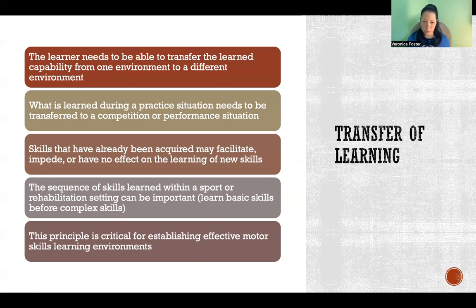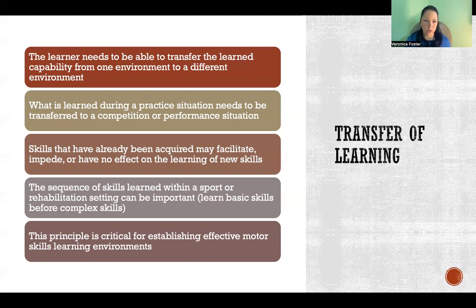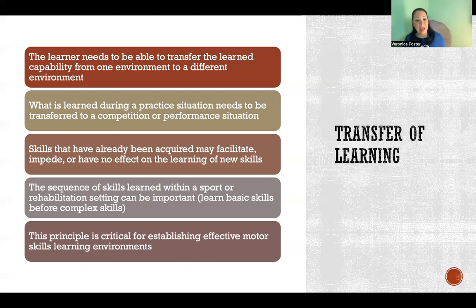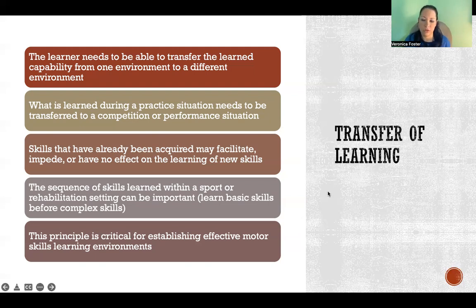When we are learning a skill after we've learned other skills previously, those skills that we've learned in the past sometimes will make the new skill easier to learn, can interfere with learning, or could have no effect at all. The sequence of skills that we learn when learning a sport or rehabilitating an injury is really important because some skills will enhance or interfere with the skills we learn next. Getting them in the right order is critical for an effective motor skills learning environment.